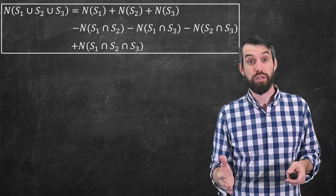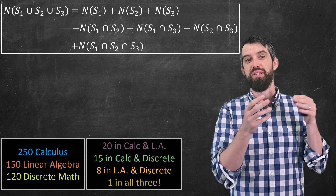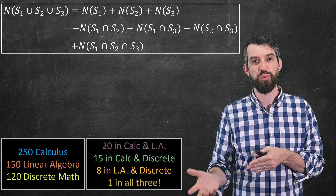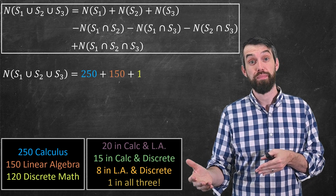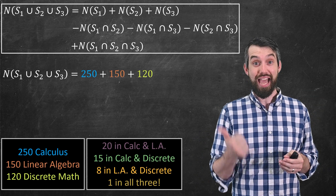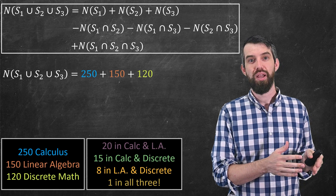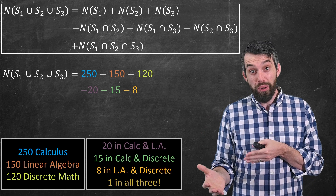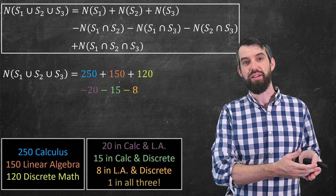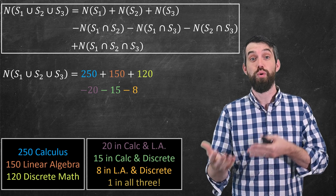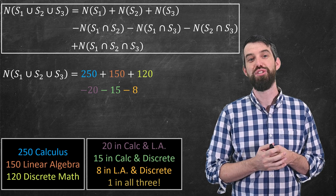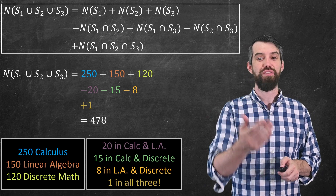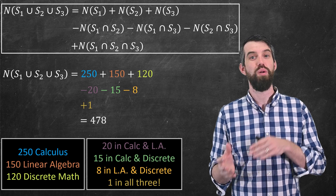Now let's apply that formula to our specific example with calculus, linear algebra, and discrete math students. S1 is calculus, S2 is linear algebra, and S3 is discrete math. The number in the union equals 250 plus 150 plus 120, minus 20 minus 15 minus 8, plus 1. Adding all these up gives 478 — the exact same number we computed by filling in the Venn diagram.